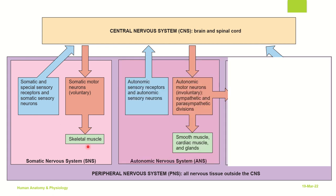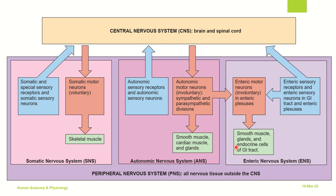Whereas the autonomic nervous system can go to the smooth muscles, the cardiac muscles and the glands. And the enteric nervous system will not only go to the smooth muscles and glands but also the endocrine cells of the GI tract.